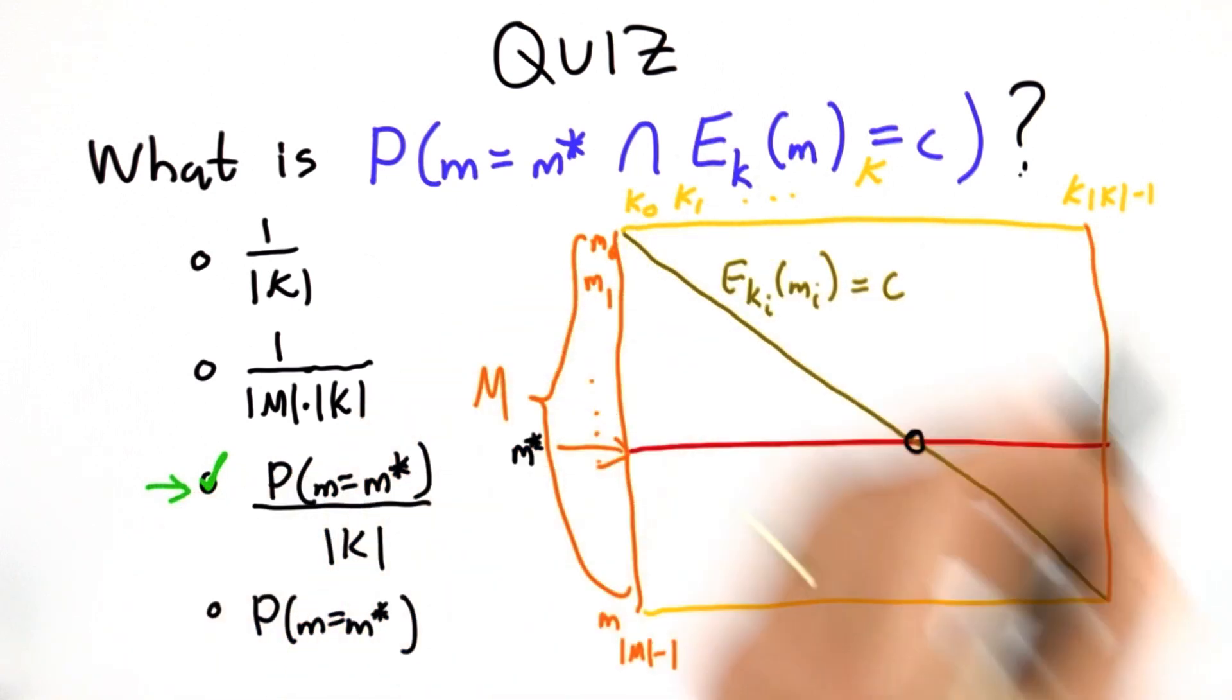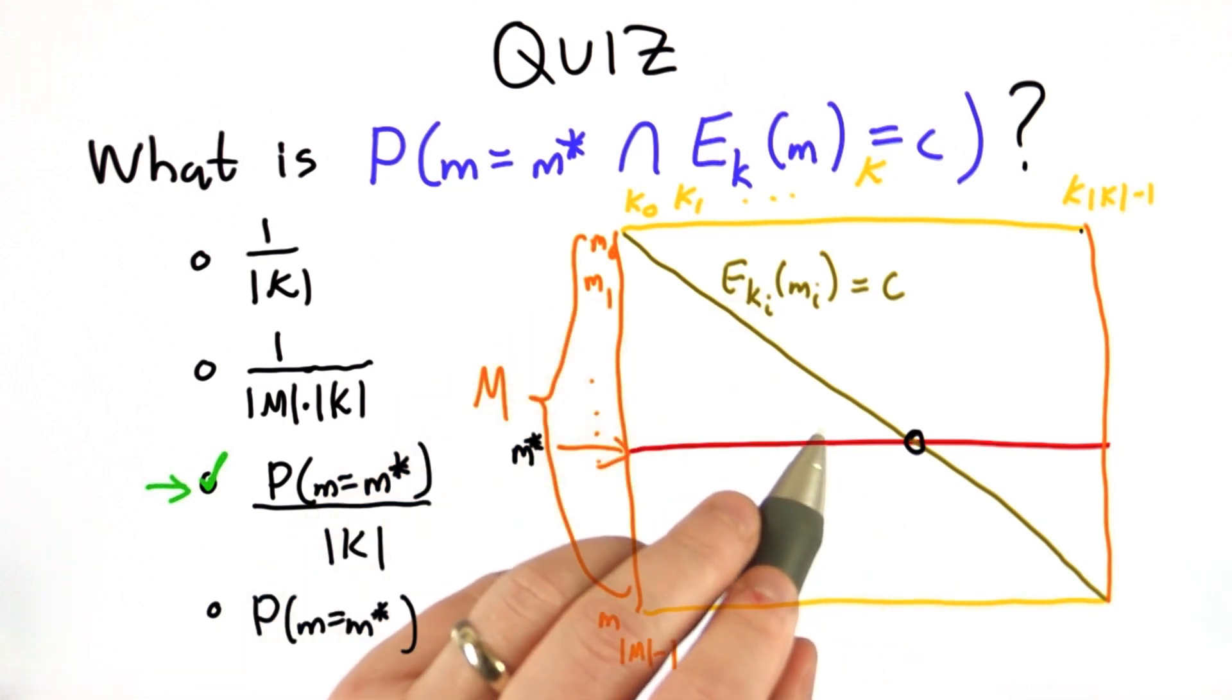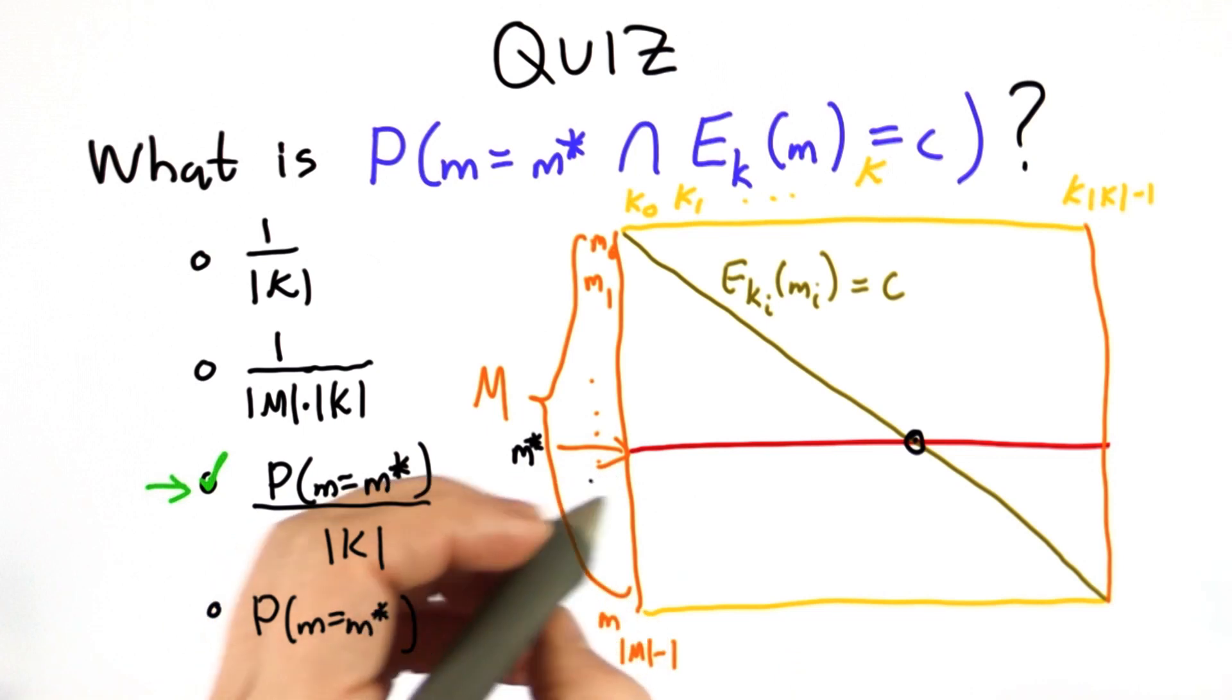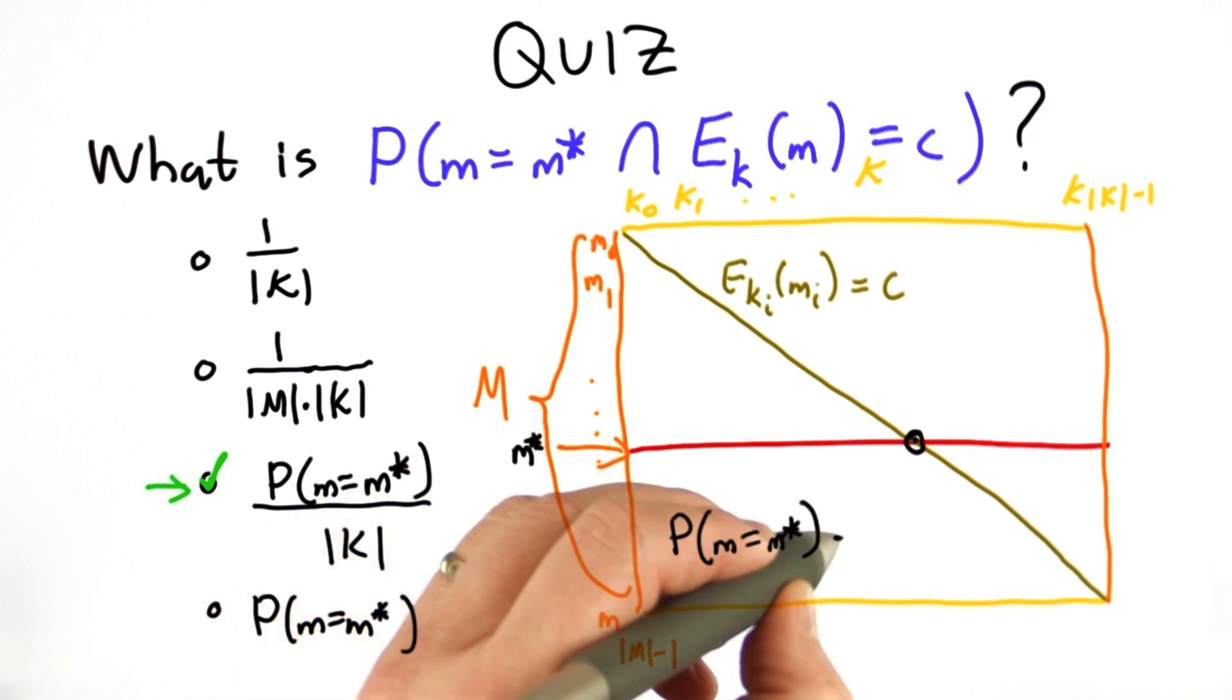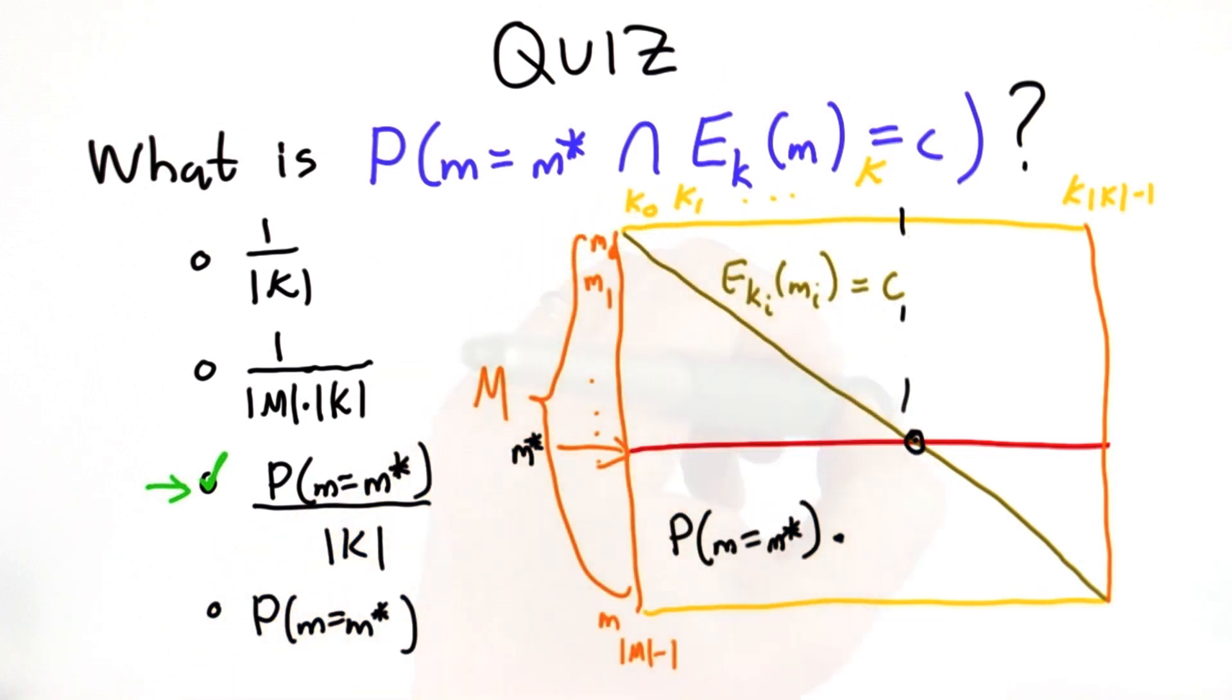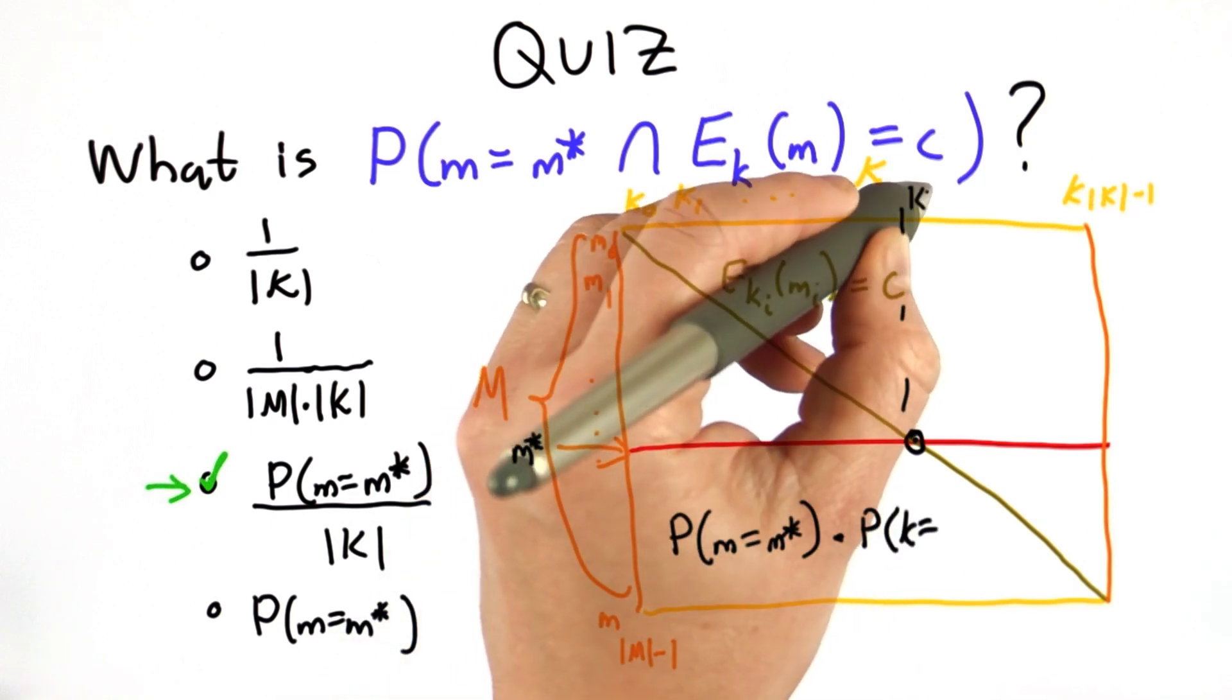For the keys, we do want to assume that the distribution is normal, that each key is equally likely. The keys are chosen perfectly at random. So we have the probability of picking M star, and we're multiplying that by the probability of picking this intersecting key, and we'll call that K star.